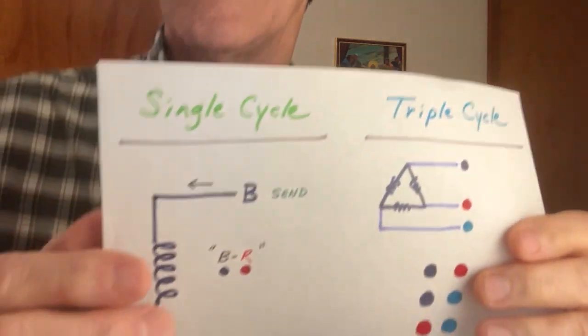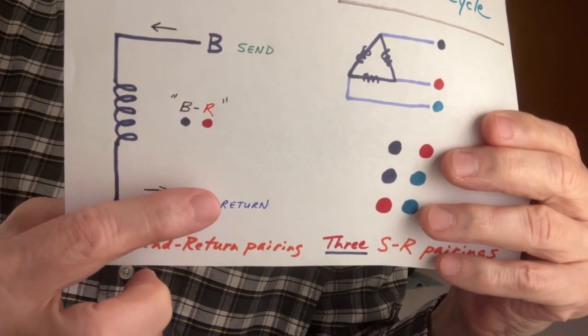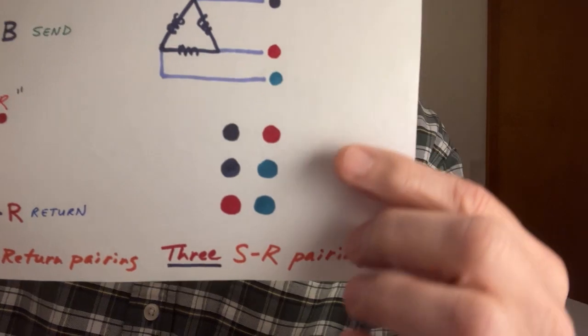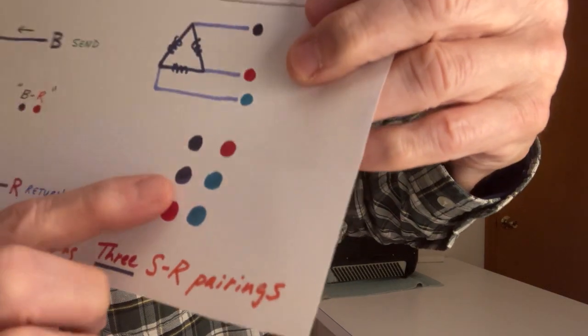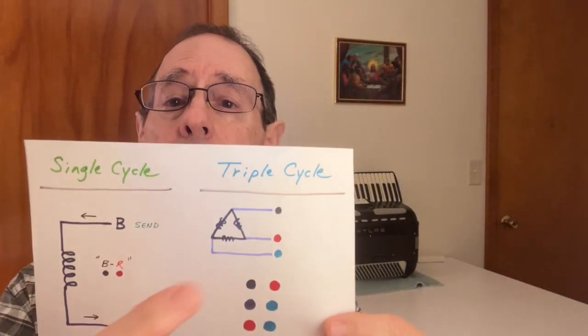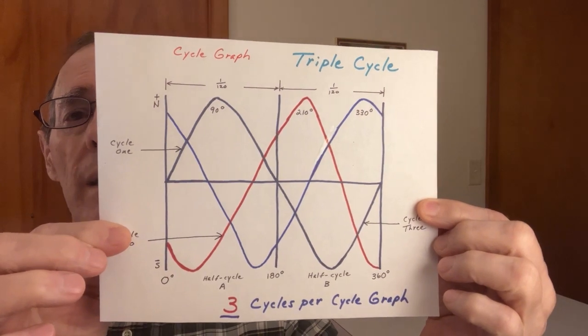You can say, well how on God's earth is that even possible? Why would this be single cycle with two conductors and this is three phase with only three conductors? That's not including the neutral, we're not talking about the neutral, we're talking about the basics. You see logically, if you think in terms of send-return pairings, you can see you have a single cycle created here, and over here you have three send-return pairings - black and red, black and blue, and red and blue. That's how you get your three send-return pairings, you get triple cycle.